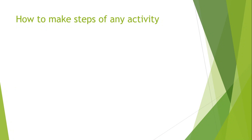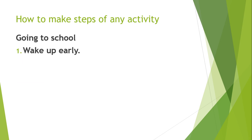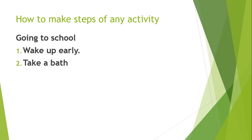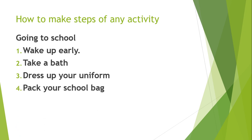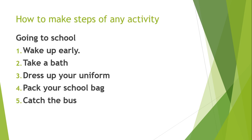Let's take an example of going to school and make the steps for this activity. Step one: wake up early in the morning — you set an alarm clock and wake up. Step two: take a bath. Step three: dress up in your uniform. Step four: pack your school bag. Step five: catch the bus. These steps form the algorithm. You can increase or decrease the number of steps — it's totally up to you — but you must make steps to create an algorithm.